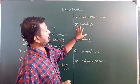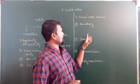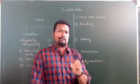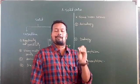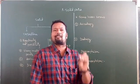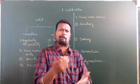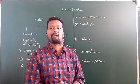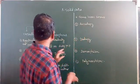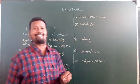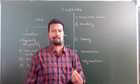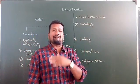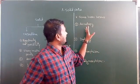Now let us define anisotropy more precisely. Anisotropy is the ability of a crystalline solid to show a change in physical property when the direction of measurement is changed. This happens because the particles in crystalline solids are arranged in a regular, orderly, and periodic manner.